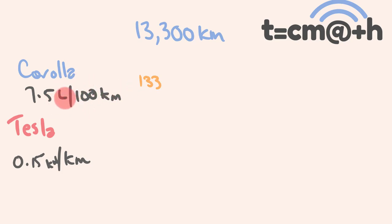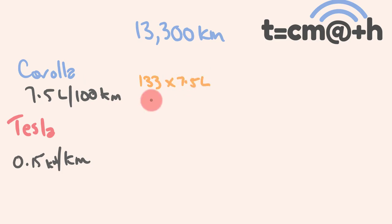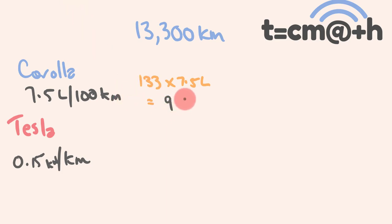For every one of those 133 lots we're using 7.5 litres, so we multiply 133 by 7.5. Working that out, we get 997.5 litres for the year in a Corolla.